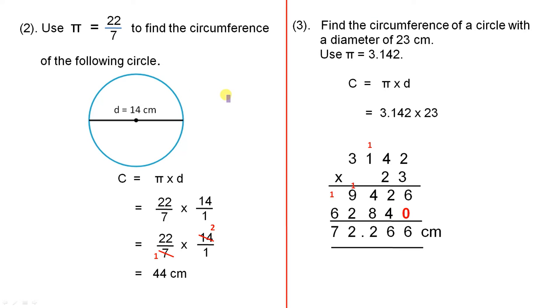Next example, use pi equals 22 over 7 to find the circumference of the following circle. Here, we're given the diameter is 14 centimetres. Since we're given the diameter, we can use C equals pi times d. Pi was given as 22 over 7. There's the diameter. I've put it in the form of a fraction because of the fraction here. What we do, we can just do cancelling. 7 into 7 goes once, 7 into 14 goes twice. 2 times 22 is 44 centimetres.